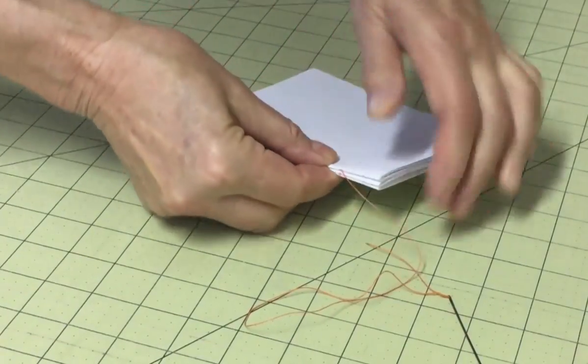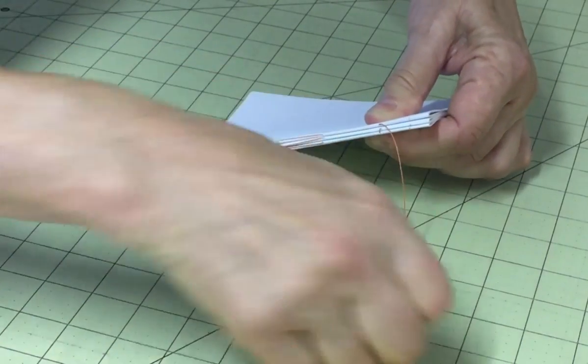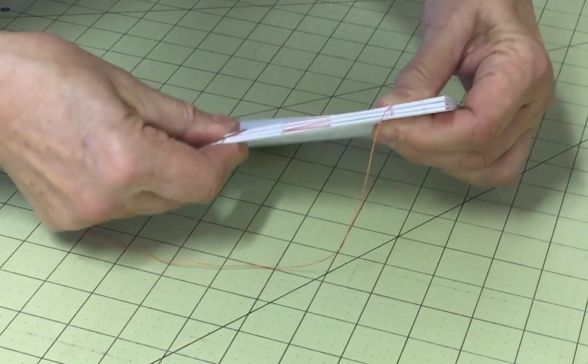When you reach the end of sewing the new signature, you'll be on the outside of the spine. Snug up the stitches, making sure they are taut but not overly tight.